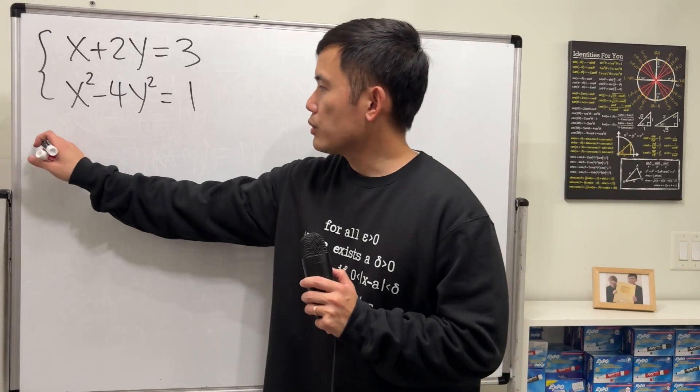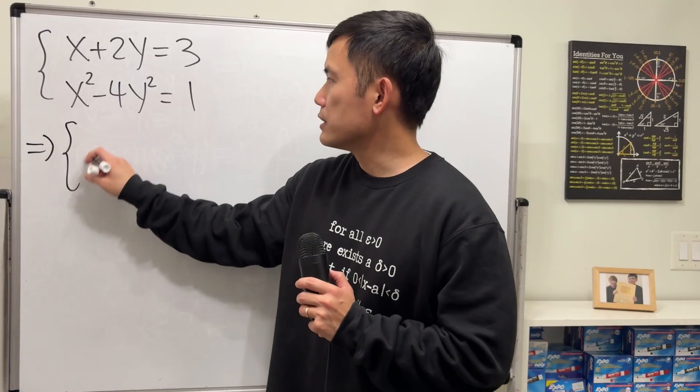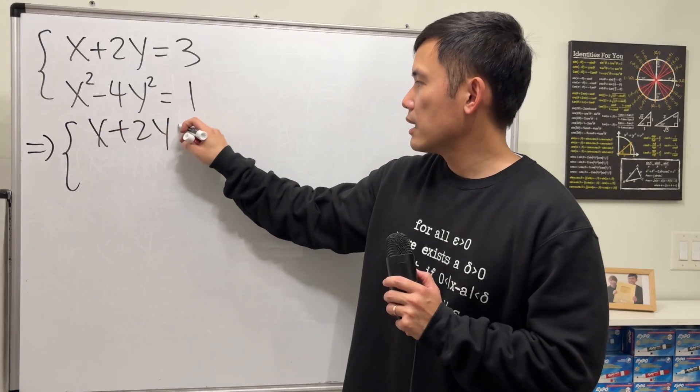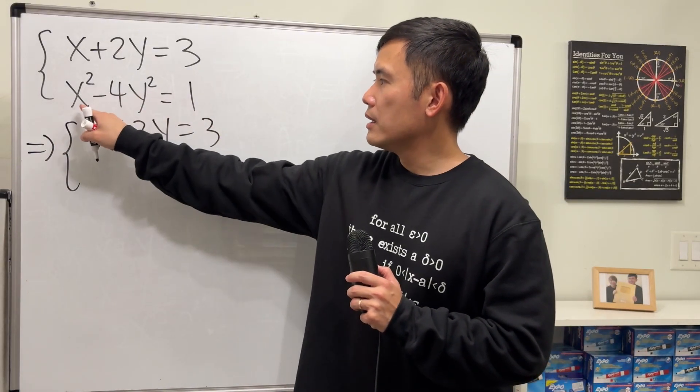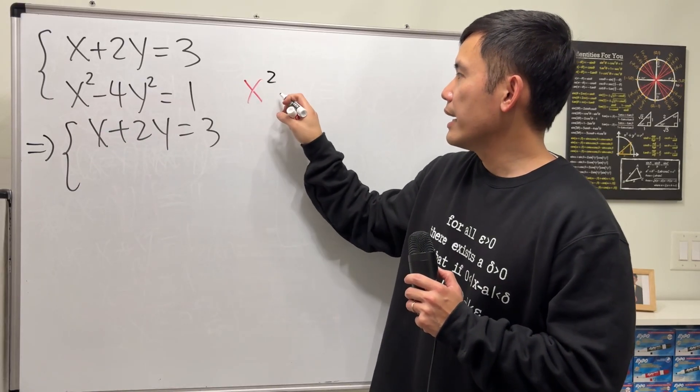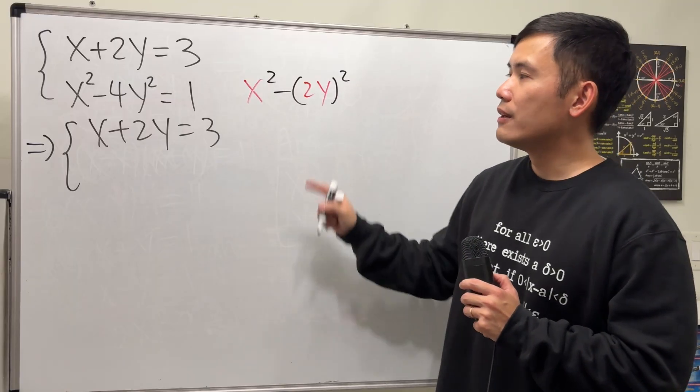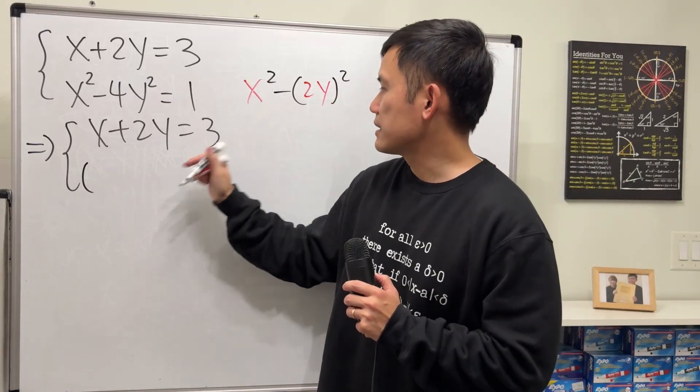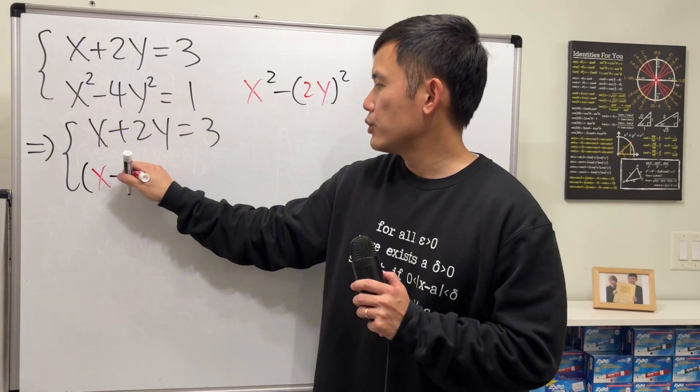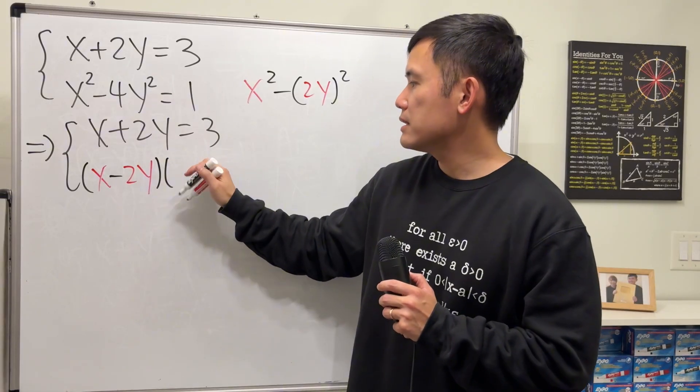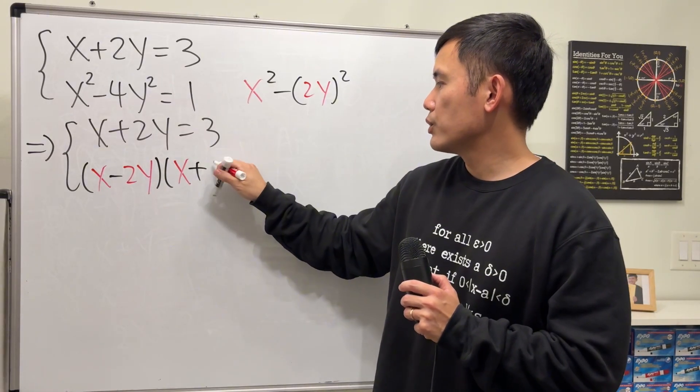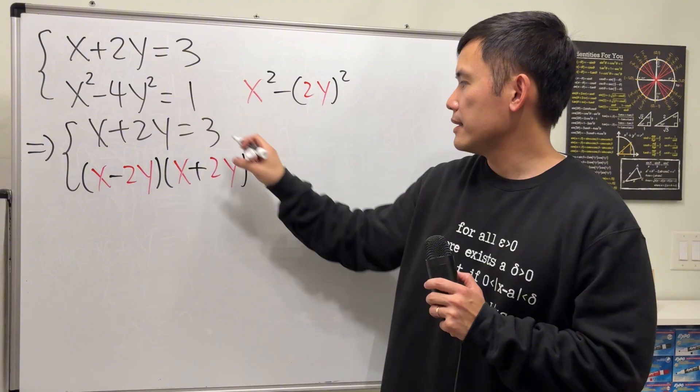By the way, this right here, I'm going to just keep the first equation. And then for the second one, we can look at this as x squared minus 2y squared. Factoring that, we get x minus 2y times x plus 2y, and that equals 1.